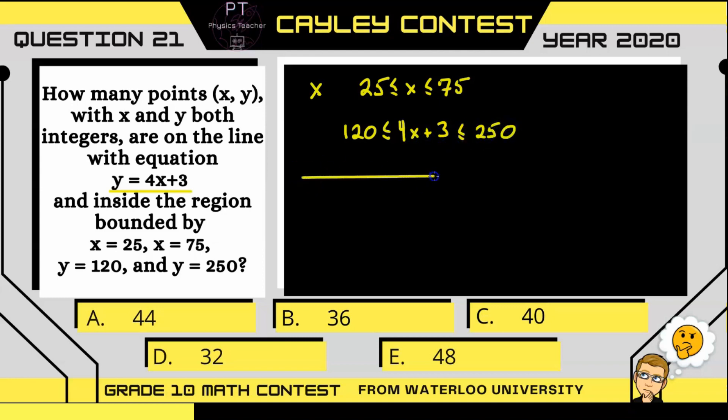So if we create a little chart here and we try a few numbers, smaller numbers closer to 25, for example 29, what we get is that 4x plus 3 is going to be 119. Not quite within this range, but what we notice is, since it's 4x plus 3, as x increases, 4x plus 3, or y, will also increase.